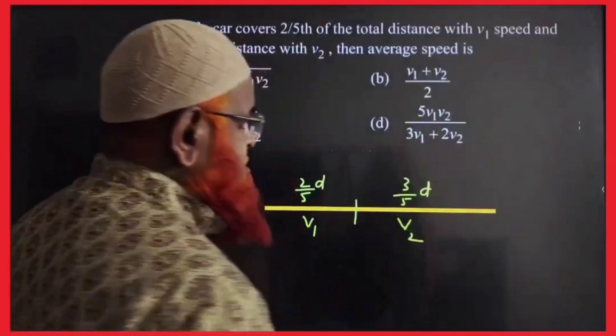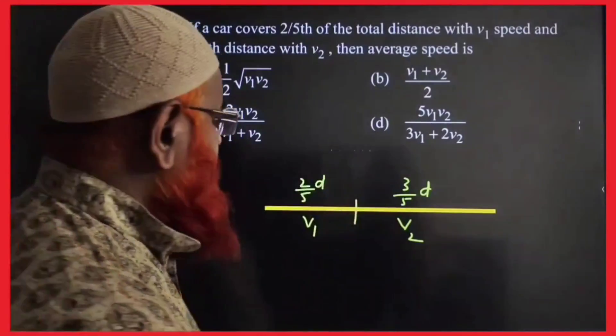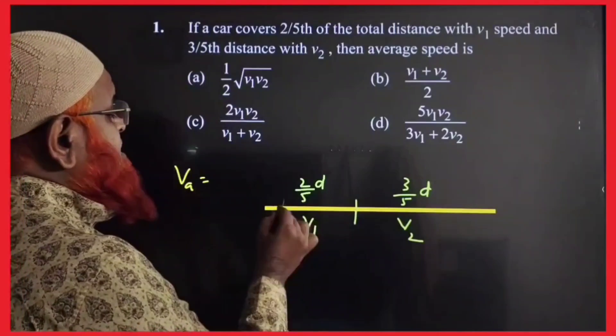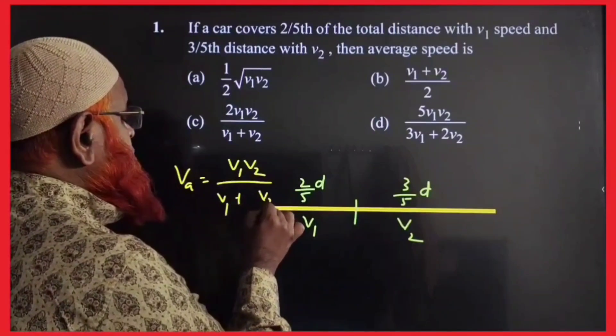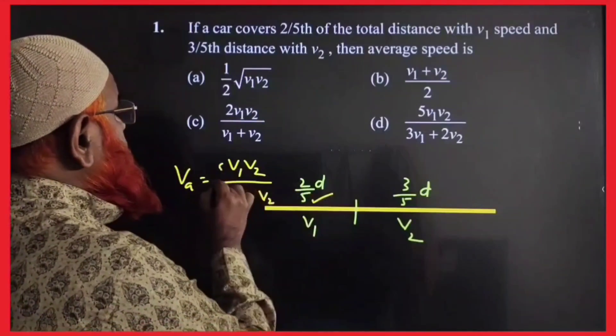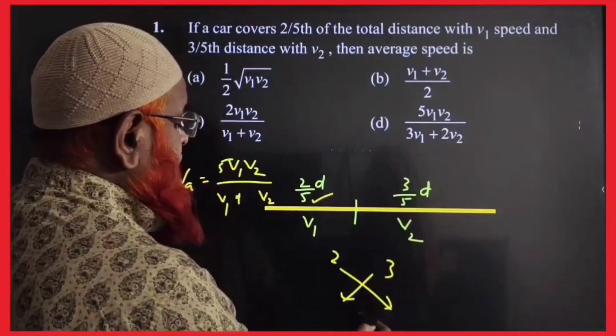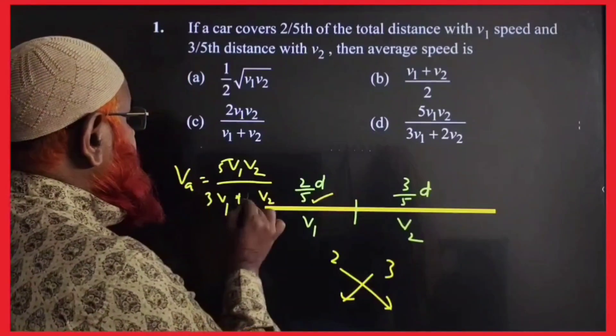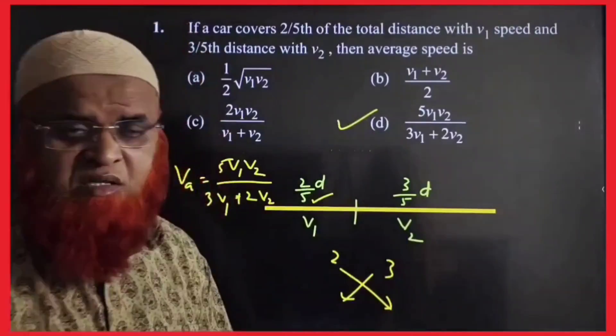Next case, also the same type which I have already explained. So, this also, two fifths and three fifths. So, we average shortcut method is nothing but, first, you write v1, v2 by v1 plus v2. So, one fifth and two fifths, the denominator of fifths, you have to take in the numerator. So, two and three is there, crisscross you do. First, you take three here and then you take two here, your answer is ready. Therefore, the option is going to be answer.